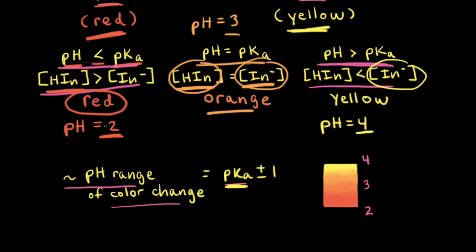We already know our solution with the acid-base indicator at a pH of 2 is red, at a pH of 3 the solution is orange, and at a pH of 4 the solution is yellow. Therefore, if we were to change the pH from 2 to 4, we would see the color of the solution go from red to orange to yellow.